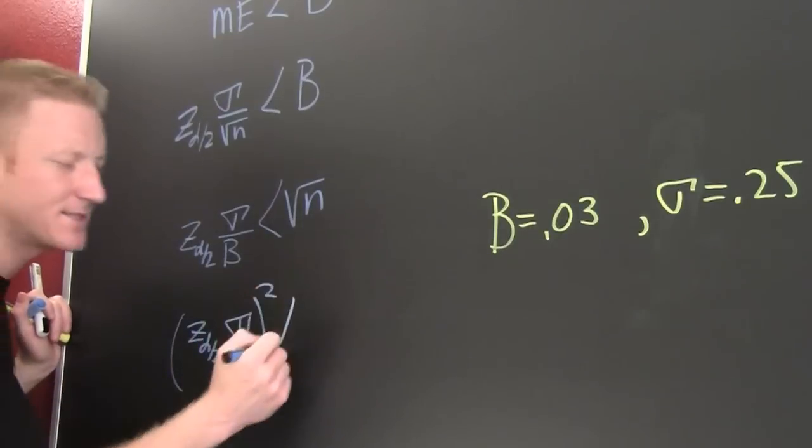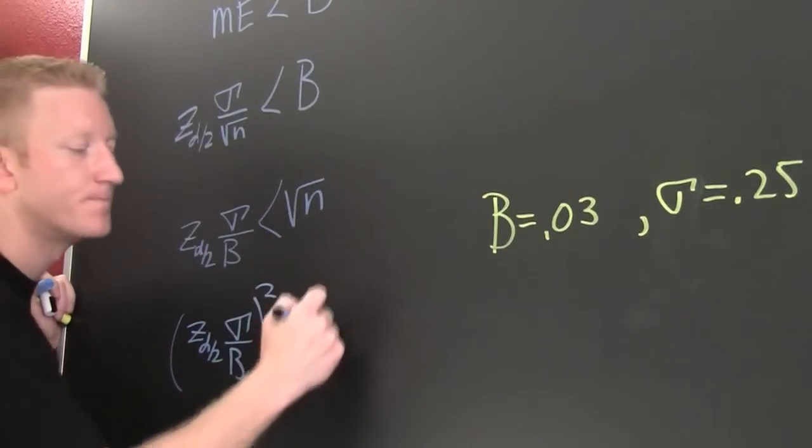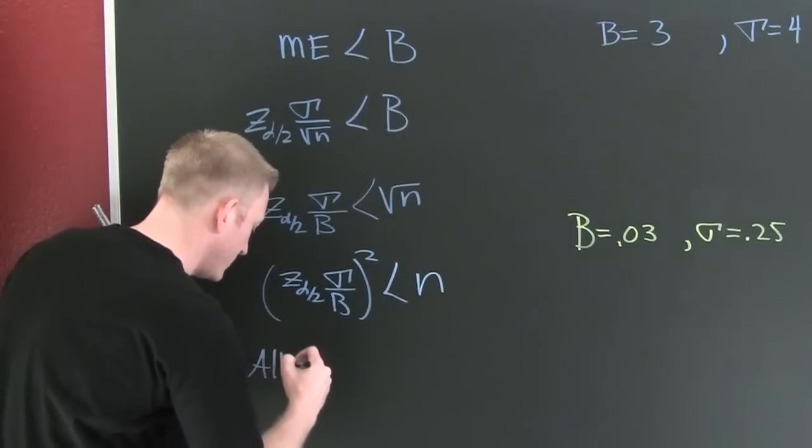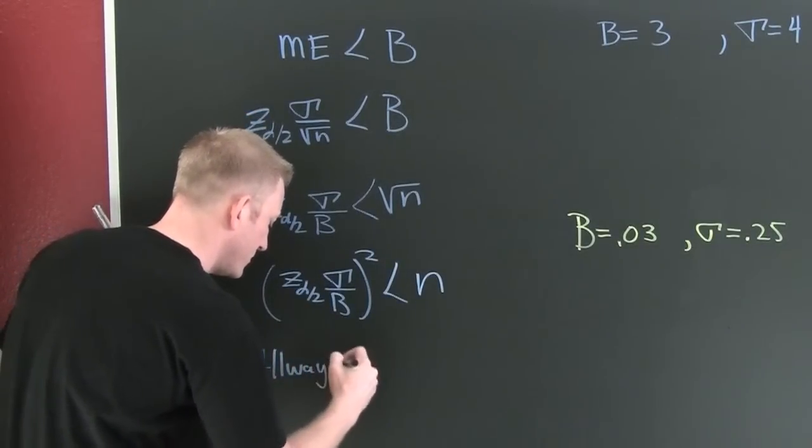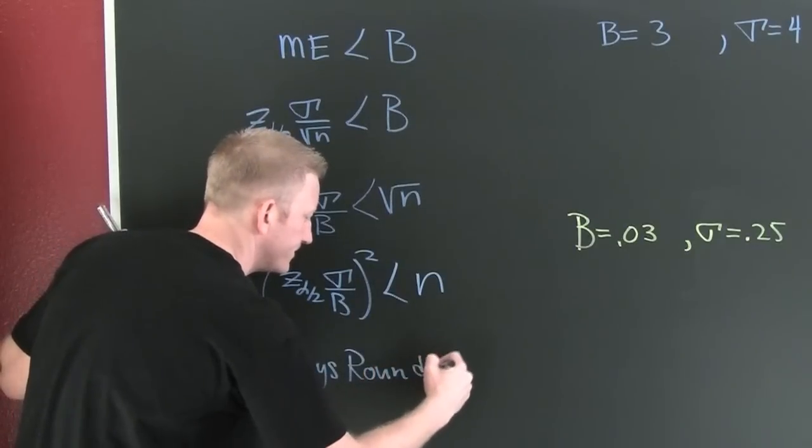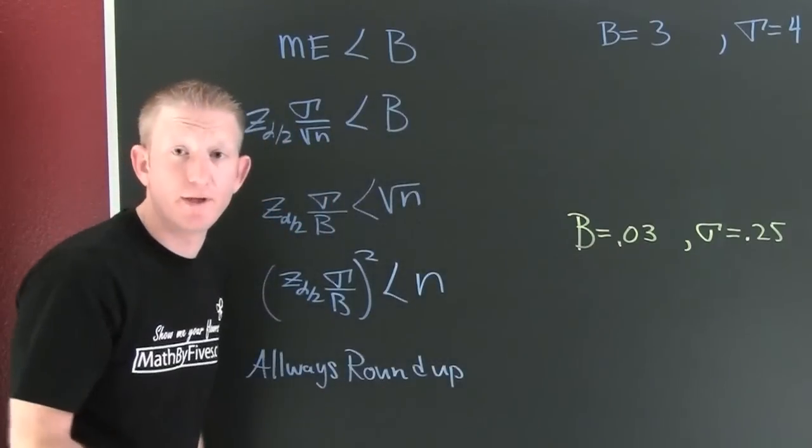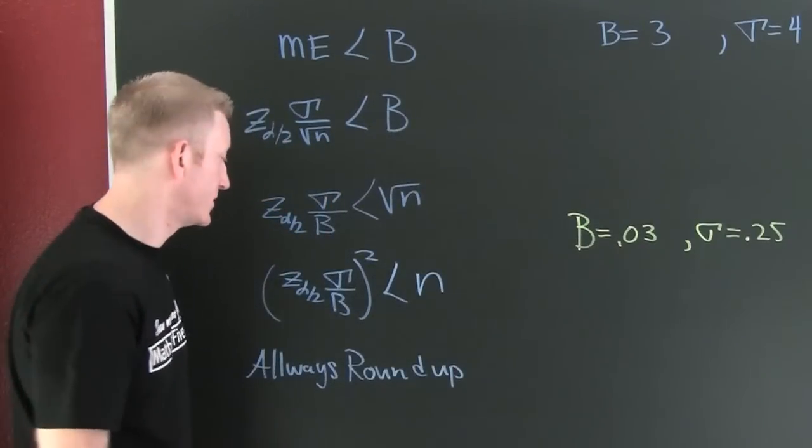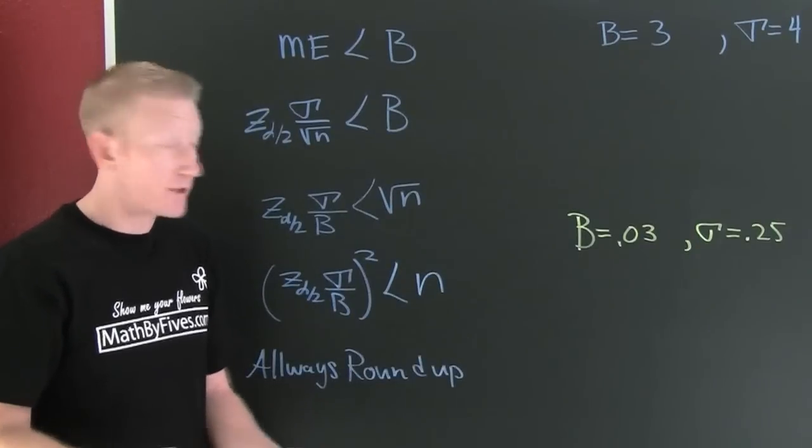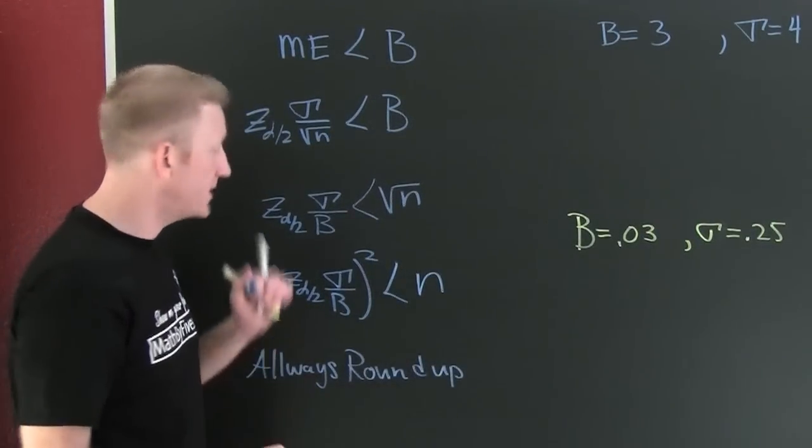So then my sample size is z alpha over 2 times standard deviation divided by my bound, squared. Don't forget to square the thing. I put these things on exams and people get all here but they forget to square it. And then always round up, of course, when you have decimal answers.